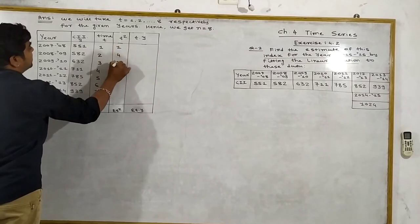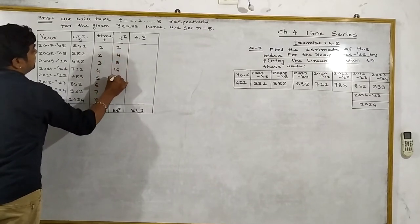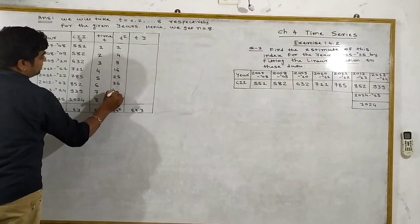T square values: 1, 4, 9, 16, 25, 36, 49, and 64.